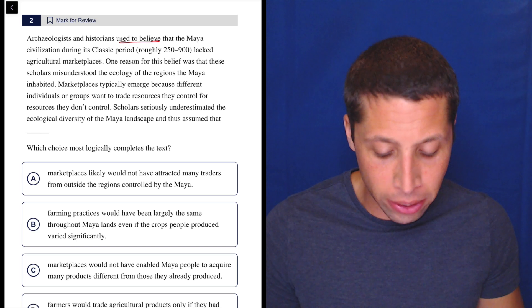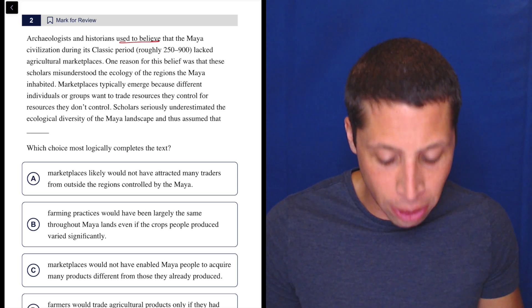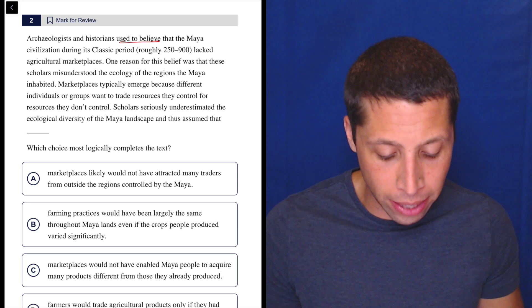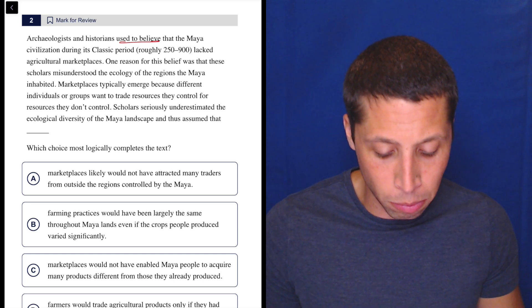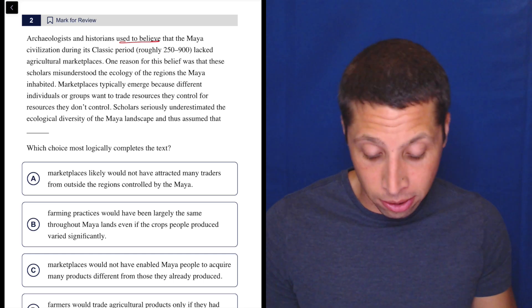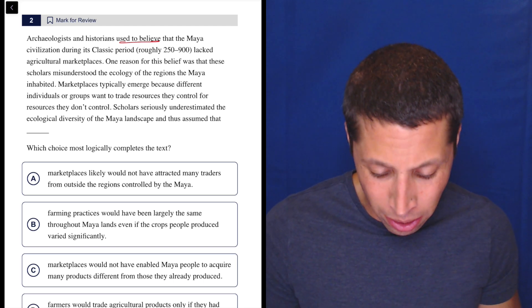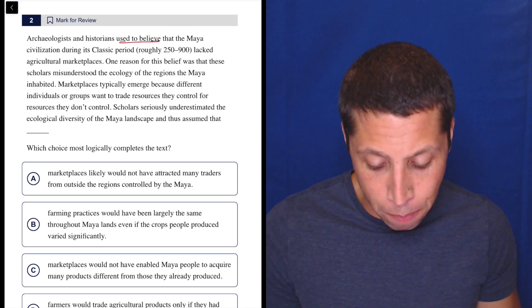Marketplaces typically emerge because different individuals or groups want to trade resources they control for resources they don't control. Scholars seriously underestimated the ecological diversity of the Maya landscape and thus assumed that - I'm kind of confused here. I can go back.